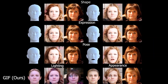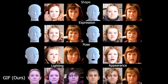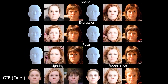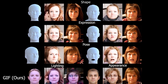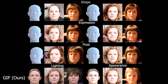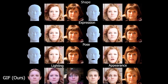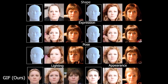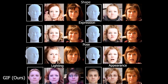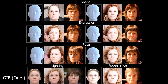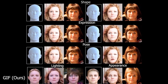GIF specifically provides control over facial shape, expression, head and jaw pose, appearance and lighting, similarly to existing 3D face models, while preserving the photorealism of generative networks or GANs. The key is to leverage explicit 3D geometry information during training as conditioning to learn this animator control.